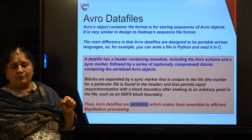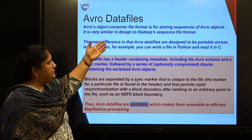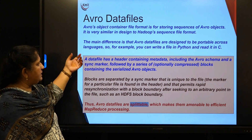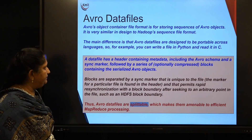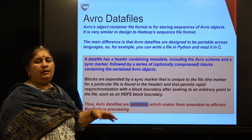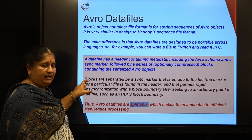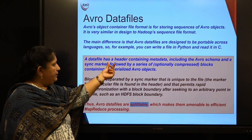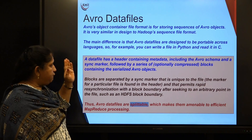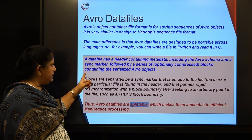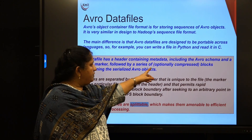Avro's object container file format is for storing sequences of Avro objects. Everything it stores will be in the form of an object. As mentioned, it uses JSON notations. It is very similar in design to Hadoop's sequence file format. The difference is that Avro data files are designed to be portable because they must support various languages. The data file has a header containing metadata including the Avro schema and a sync marker, followed by a series of blocks containing the serialized Avro objects, followed by optionally compressed data.